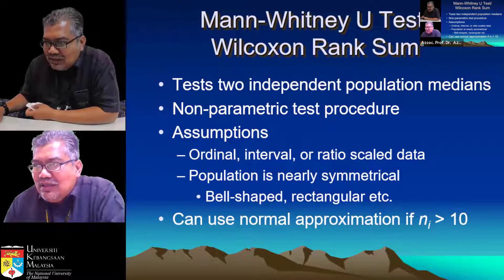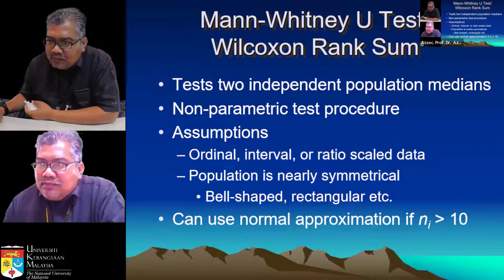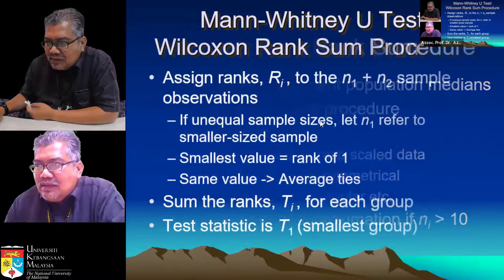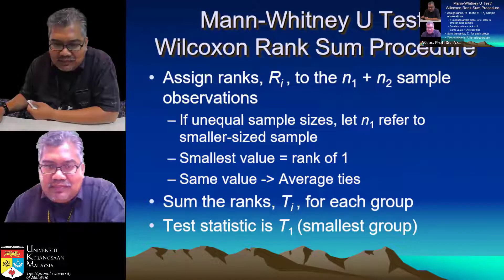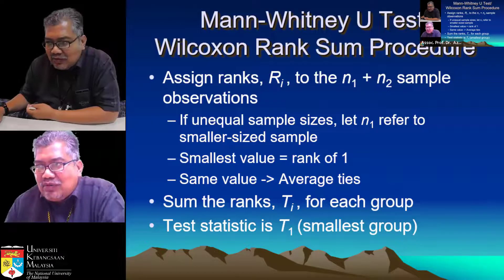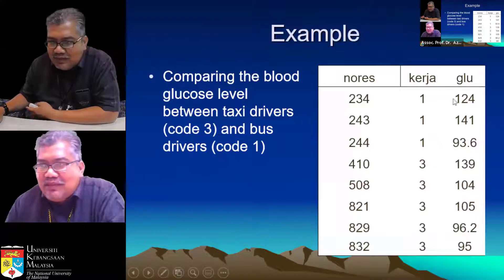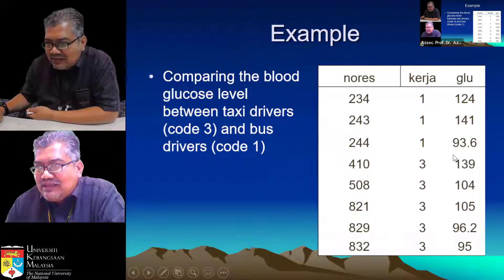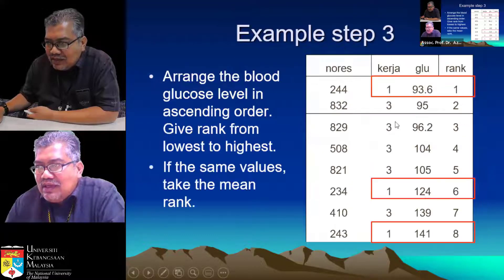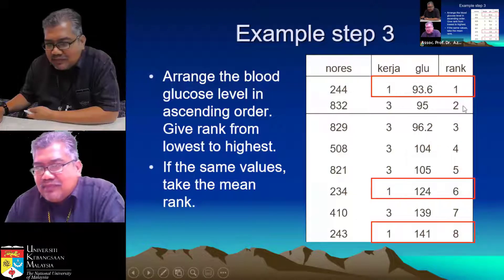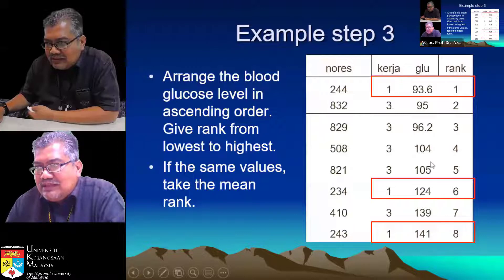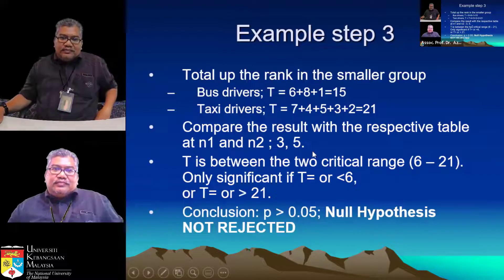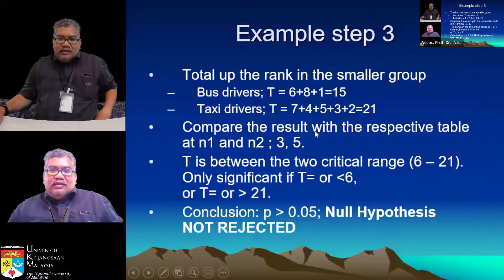The Wilcoxon rank sum test tests the two independent population medians. We use median because the data is not normal. It is very simple: you just rank the values as though they are from one group, then sum up the ranks according to each group. Here is an example with blood glucose levels of taxi drivers and bus drivers — group one is bus drivers, group three is taxi drivers. You sort the values from lowest to highest and rank them from one to eight. After you're done, you sum up the ranks and refer to the table to see whether the p-value is significant. Of course, it's easier to do using SPSS.